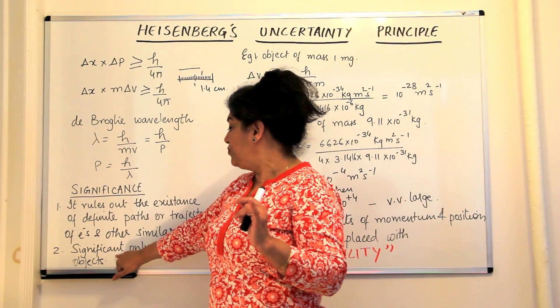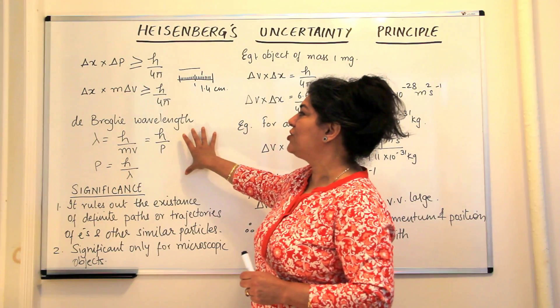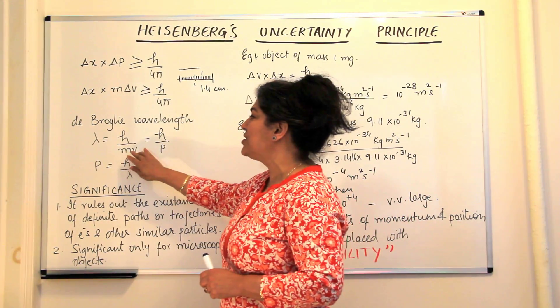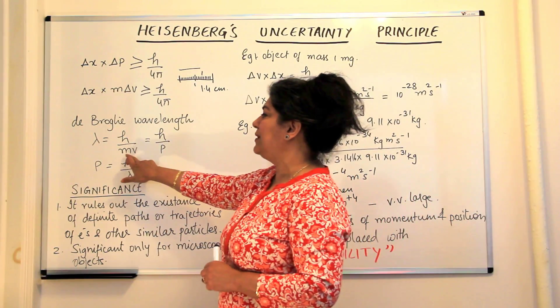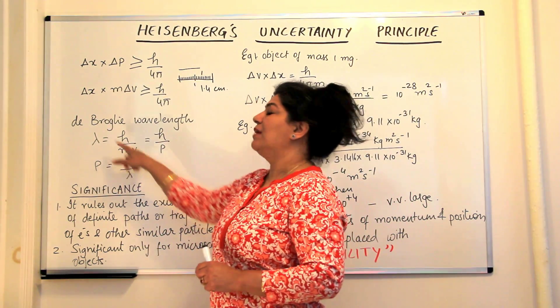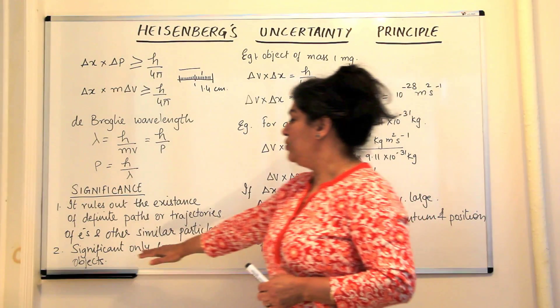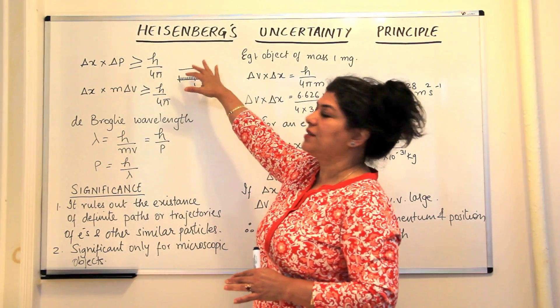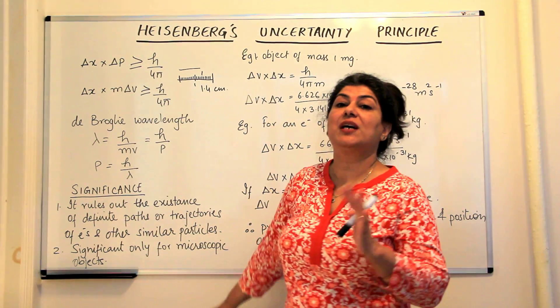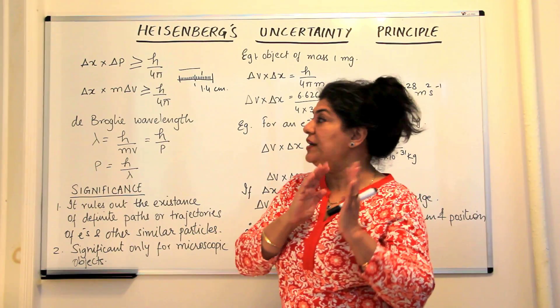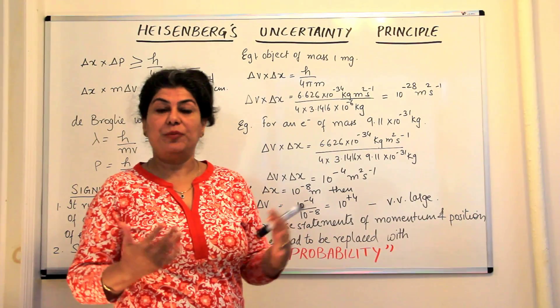Another point is that this would only be significant for microscopic objects. We notice this also in the case of de Broglie wavelength. Why do we not notice the wave-like nature of macroscopic particles? The reason was that the mass is so big that the wavelength becomes very small and hence you cannot notice the wave-like nature. So the Heisenberg's Uncertainty Principle is also significant only when you're talking about subatomic or particles which are very, very small, microscopic objects.